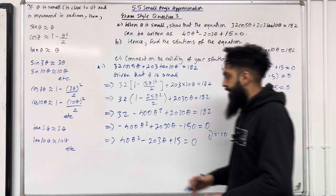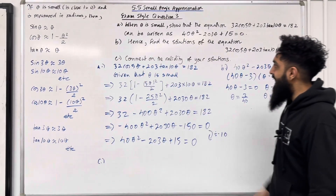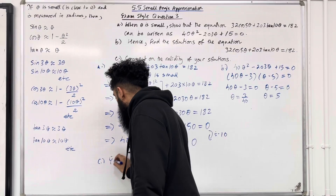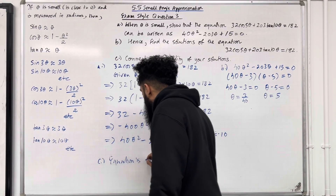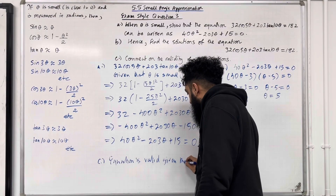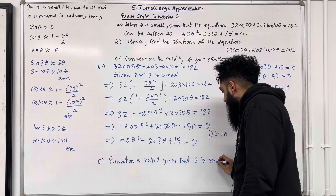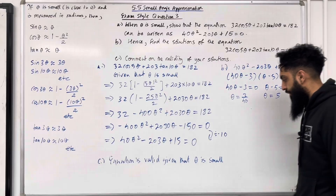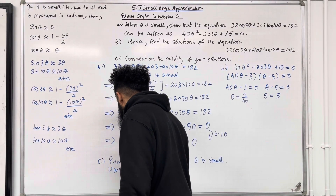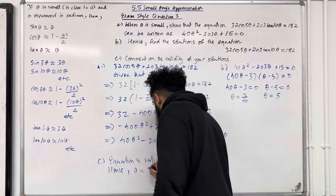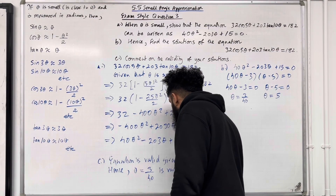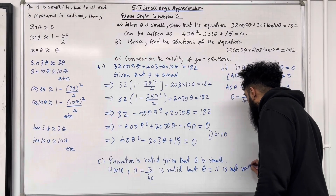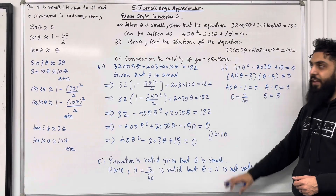For part C, comment on the validity of the solutions. This equation is valid given that theta is small, meaning as close to 0 as possible. Hence θ = 3/40 is valid, but θ = 5 is not valid. That completes part C and exam style question 3.